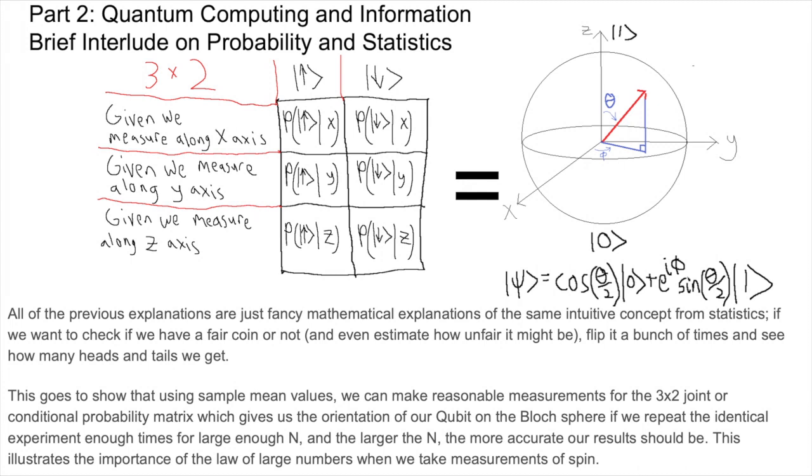This goes to show that using sample mean values, we can make reasonable measurements for the 3 by 2 joint or conditional probability matrix, which gives us the specific orientation of our qubit on the Bloch sphere if we repeat the identical experiment enough times for large enough n, and the larger the n the more accurate our results should be. This illustrates the importance of the law of large numbers when we take measurements of spin.